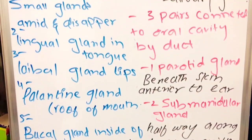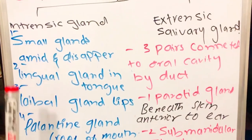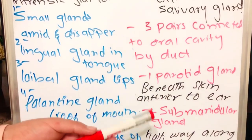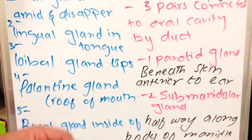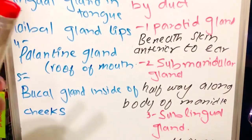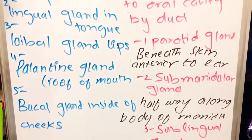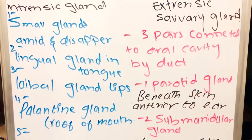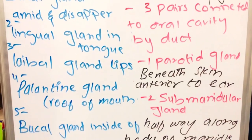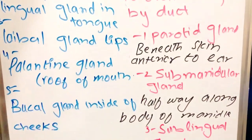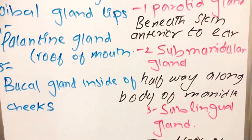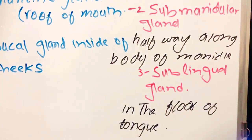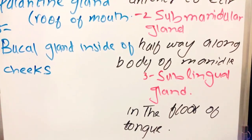Our extrinsic salivary glands have three pairs connected to the oral cavity by ducts. First is the parotid gland, second is the submandibular gland, and third is the sublingual gland. The parotid gland is present just beneath the skin, anterior to the ear. The submandibular gland is halfway along the body of the mandible. The sublingual gland is present in the floor of the tongue and is connected with multiple ducts.